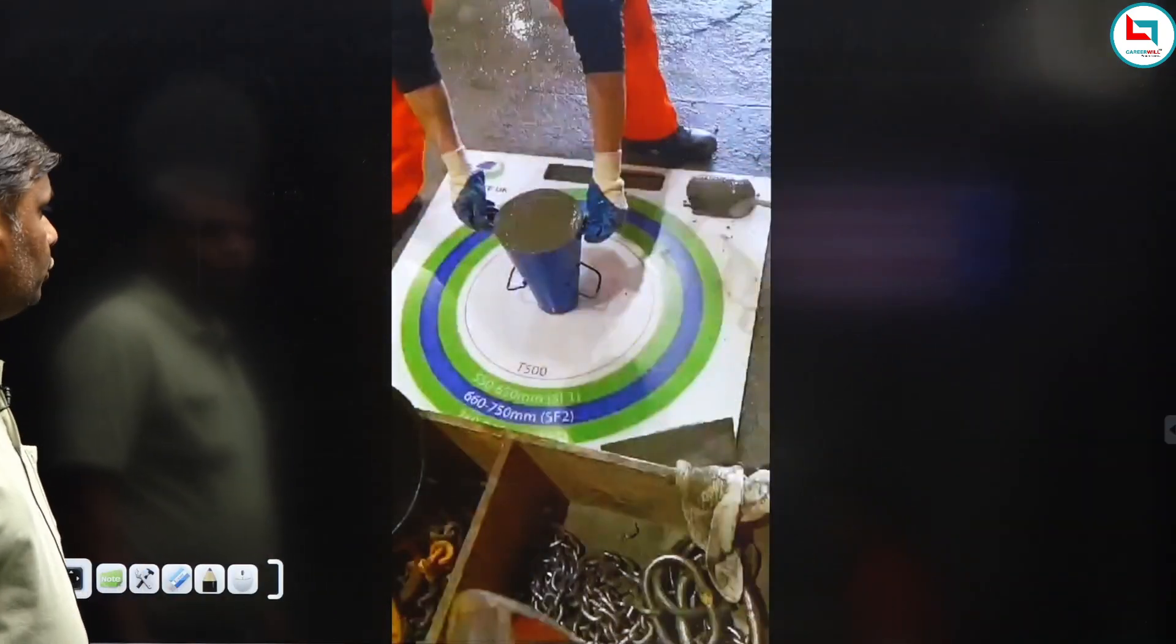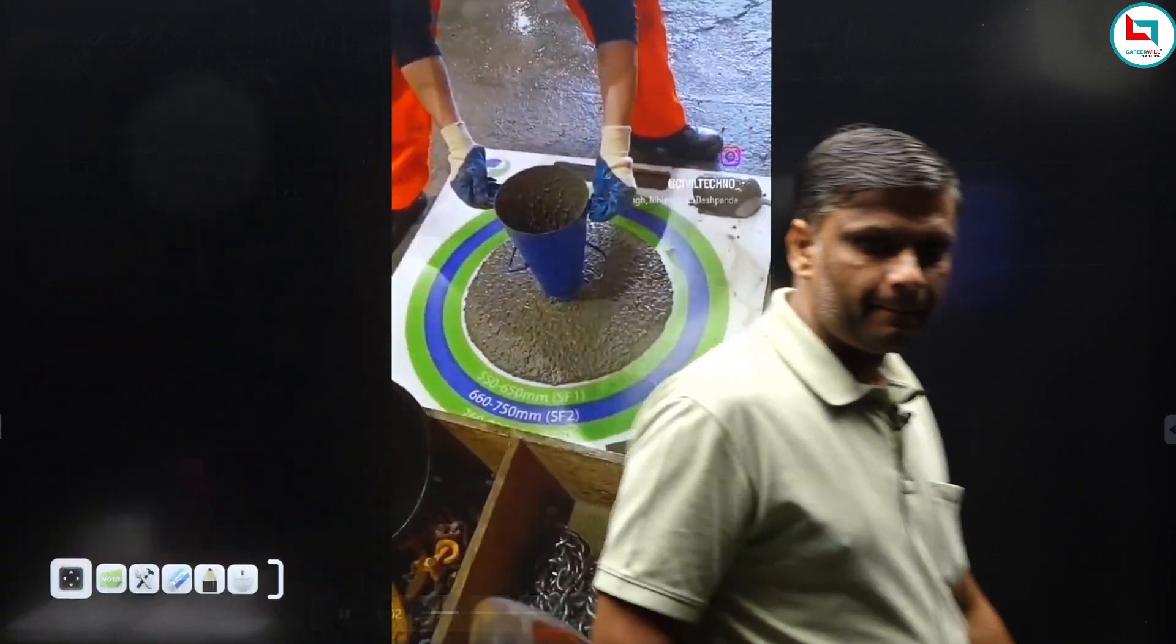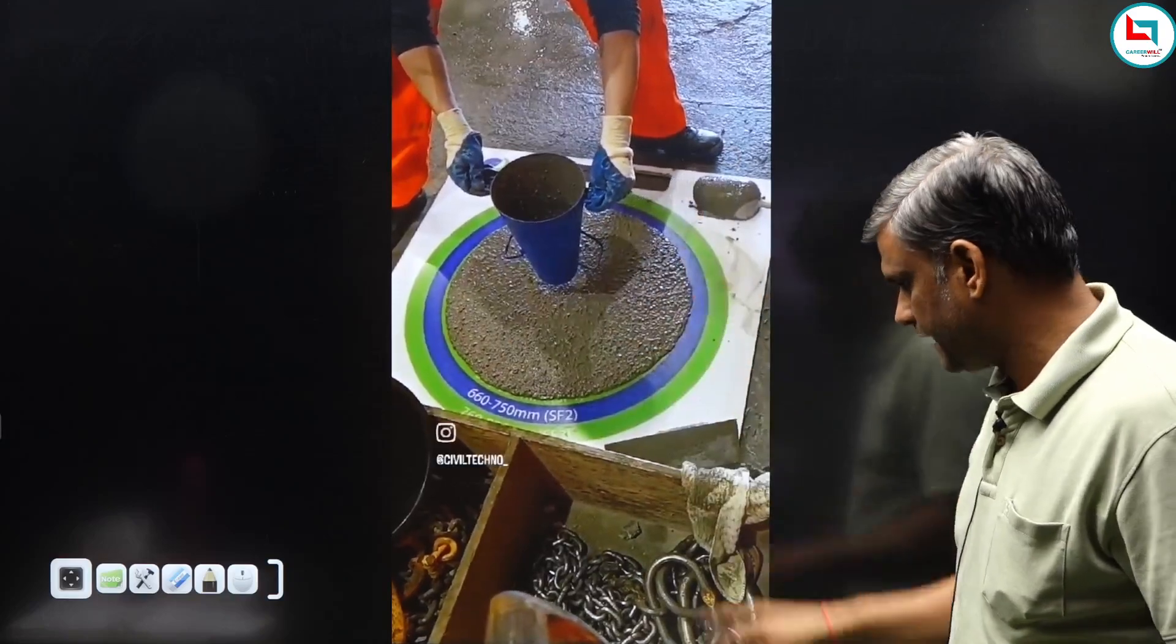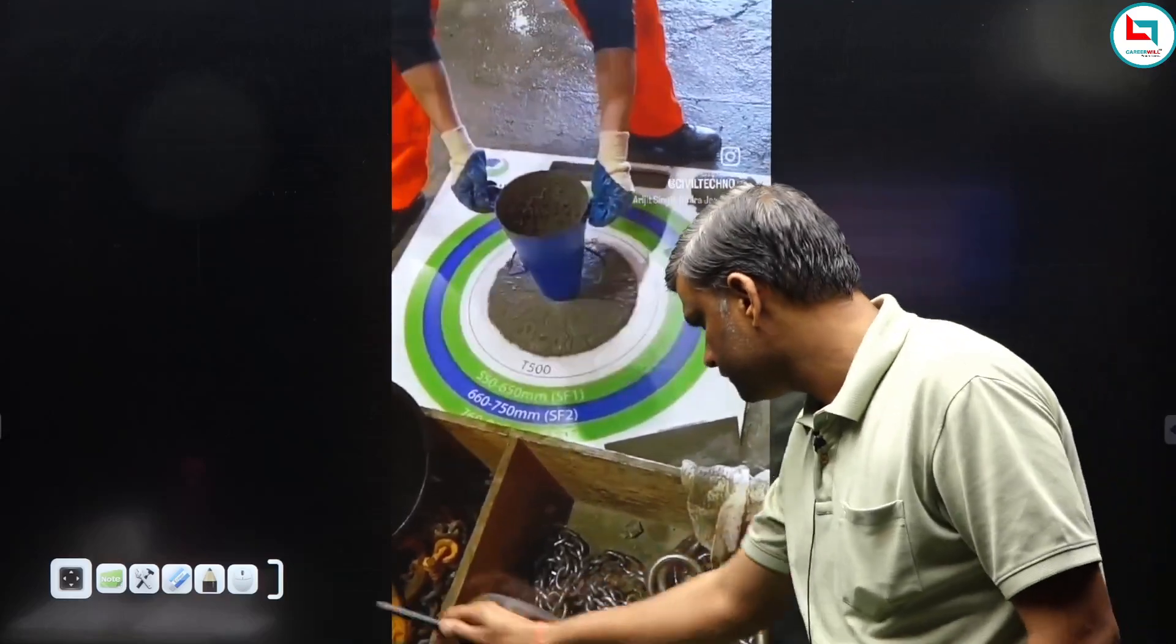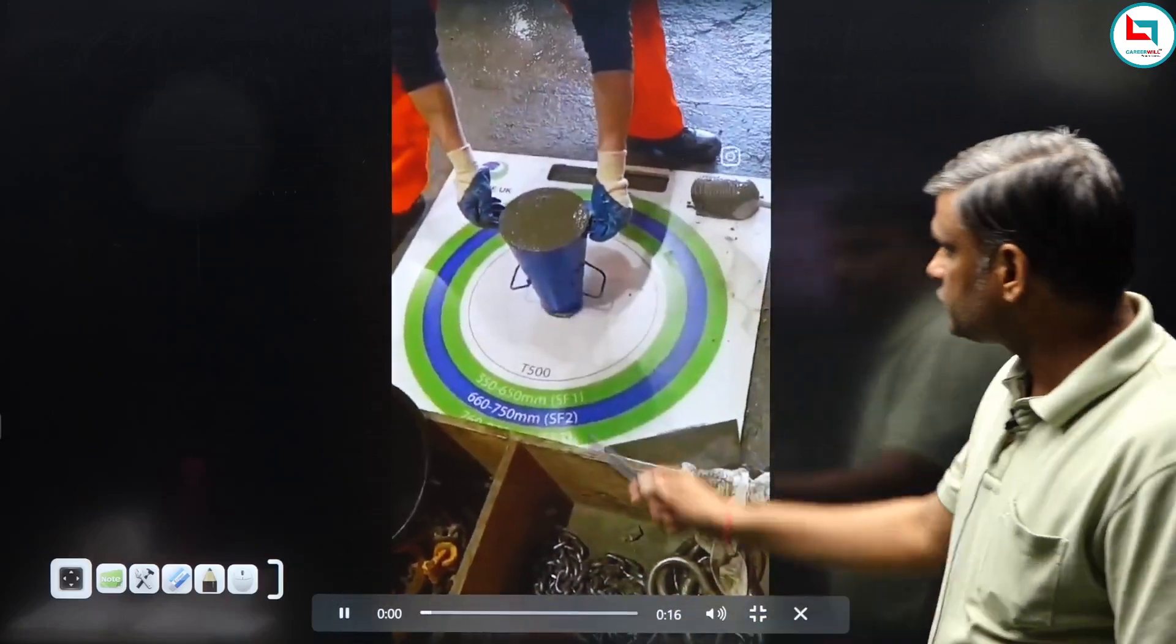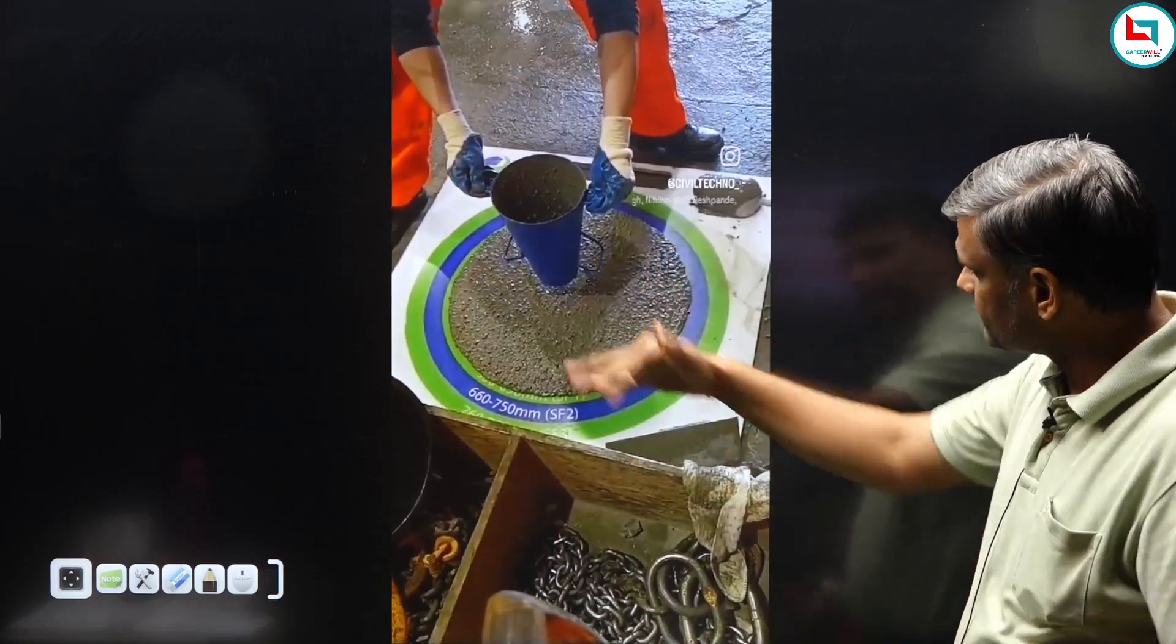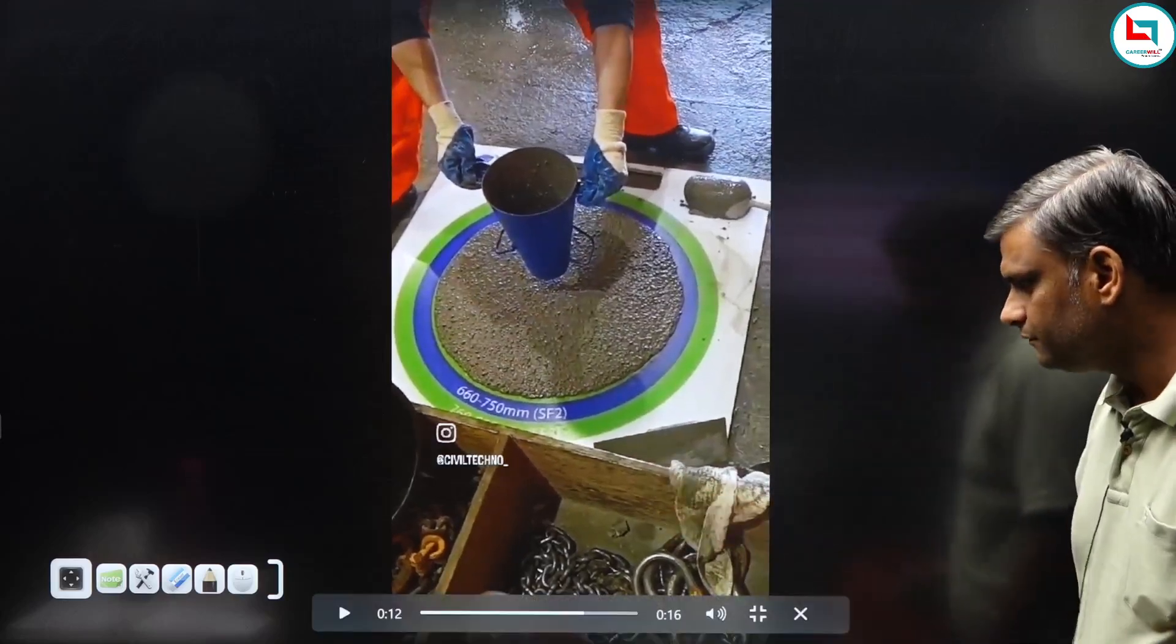Okay, so you can see the video here. You can see the value of the slump. See, starting with this - basically, the flow is used to measure the workability.